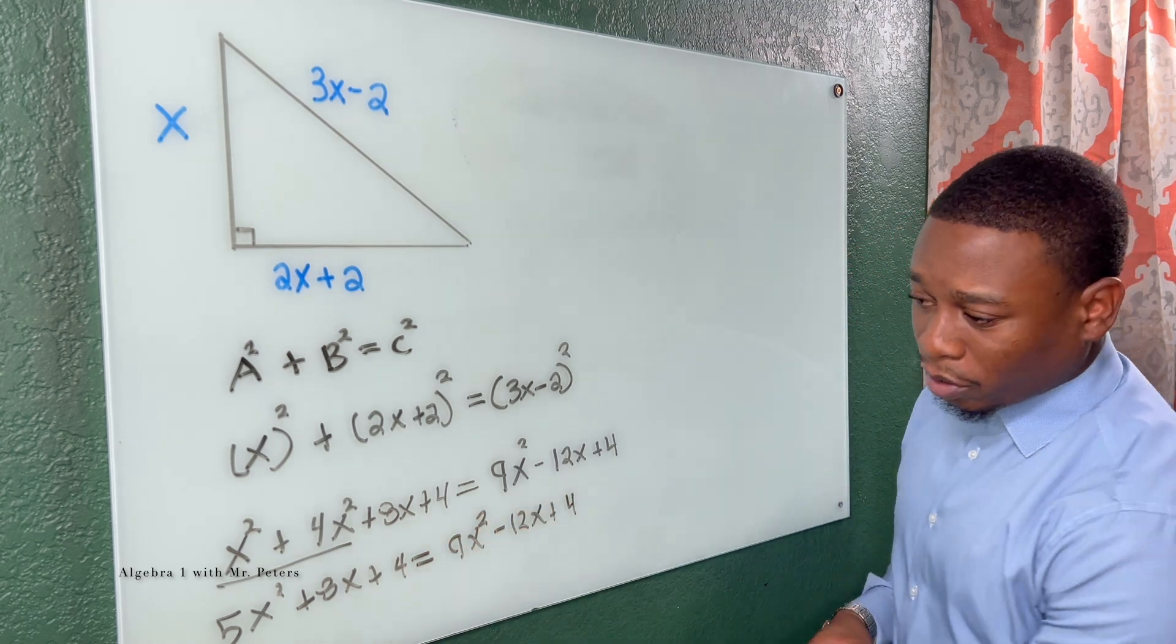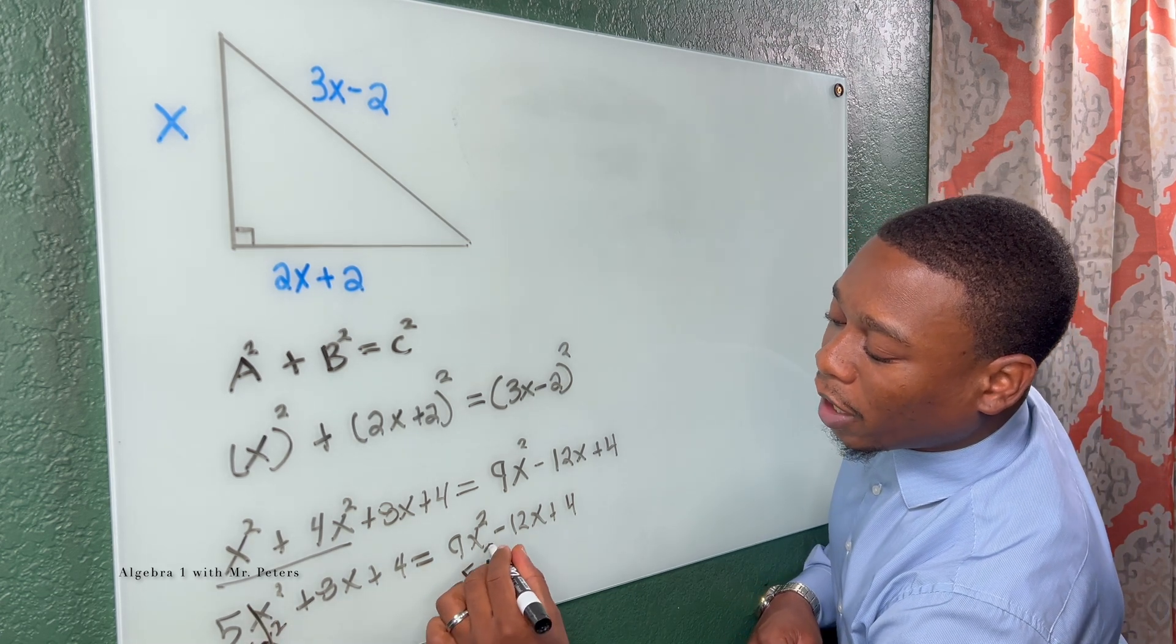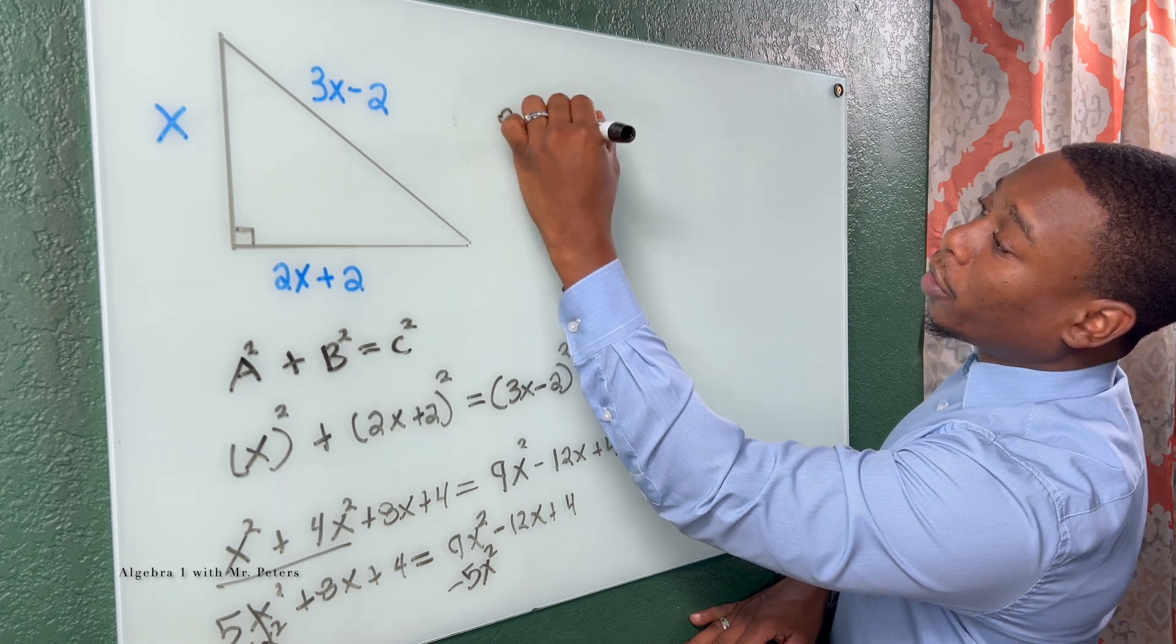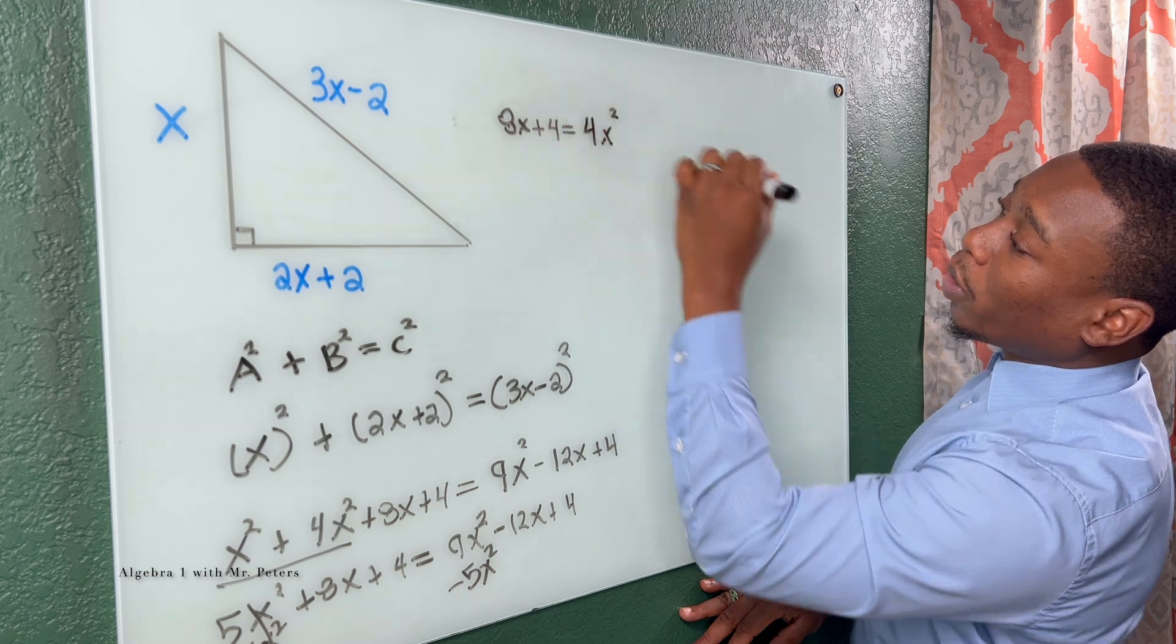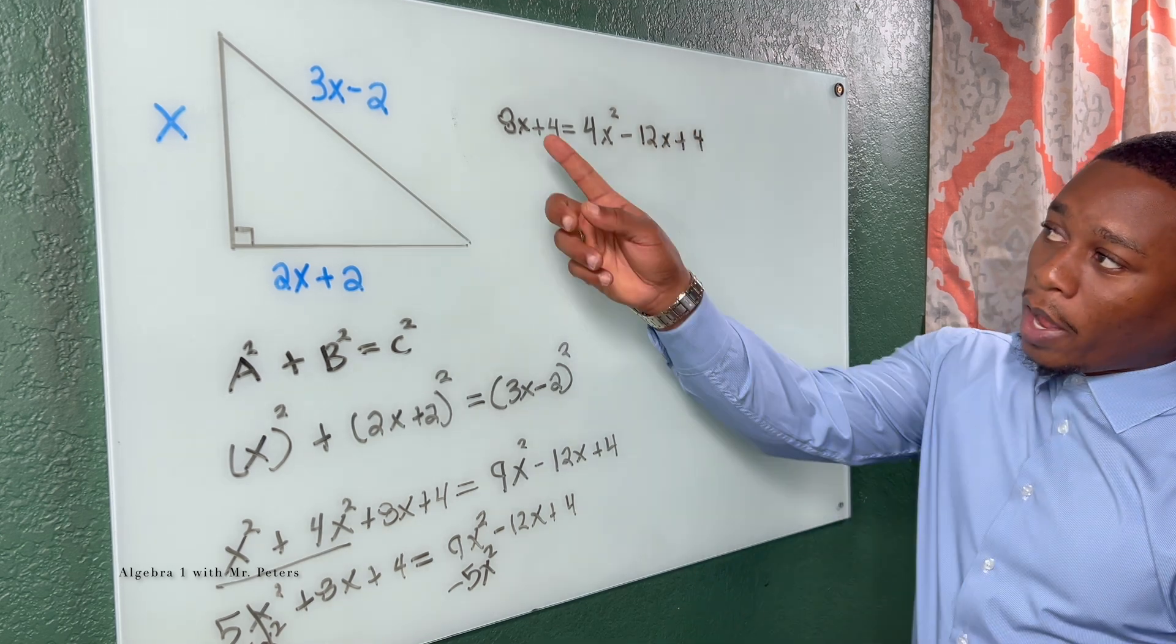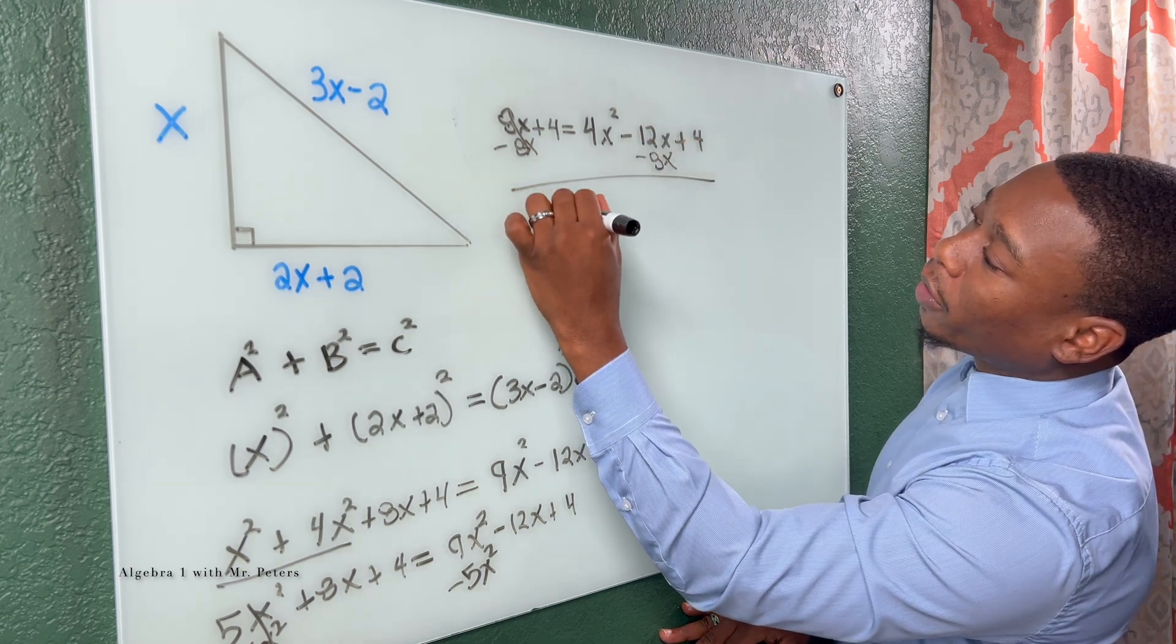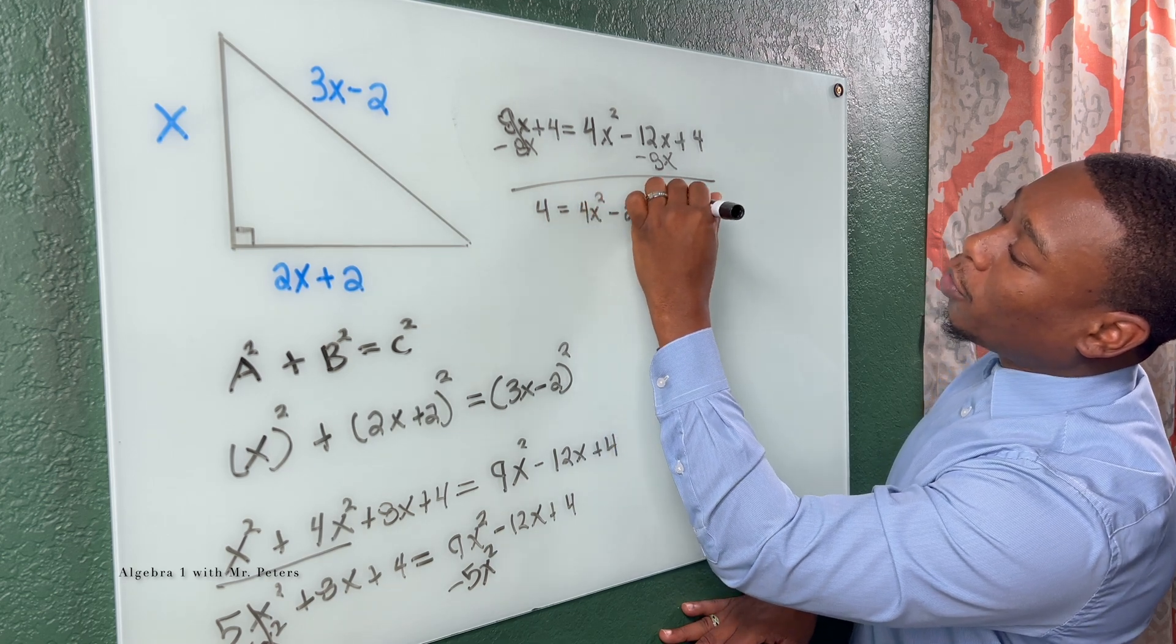So the first thing I'm going to do is subtract 5X squared from both sides, because I want to keep X squared positive. So once I do that, I'm going to have 8X plus 4 is equal to 4X squared minus 12X plus 4. So now combine like terms again, I'm going to subtract 8X.